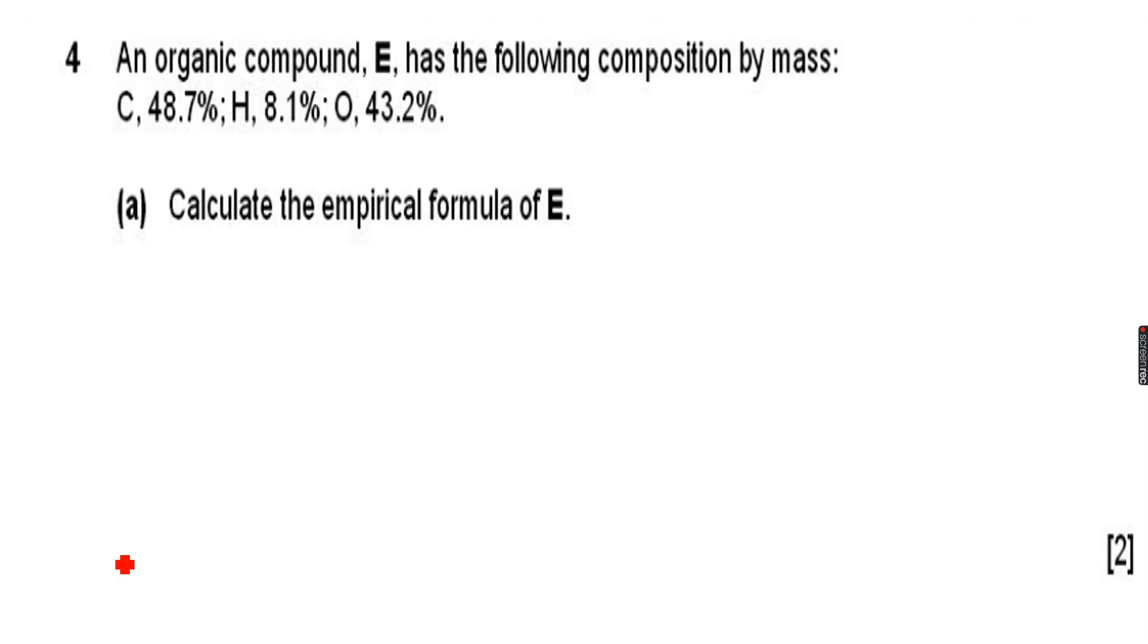An organic compound E has the following composition by mass: C 48.7%, H 8.1%, O 43.2%. Again, let's make a table. Now this example is very important because you'll get to learn something new in this.